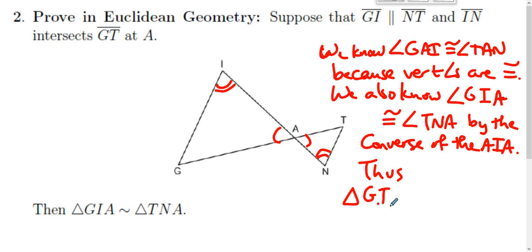Thus, triangle GIA is similar to triangle TNA by angle-angle similarity. So those are a couple of things that I would expect you to know how to do. More will follow in the discussion. Looking forward to seeing how you do this.